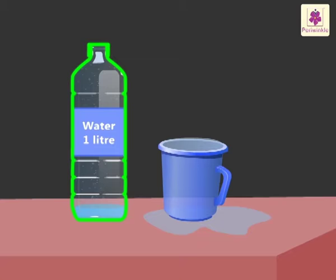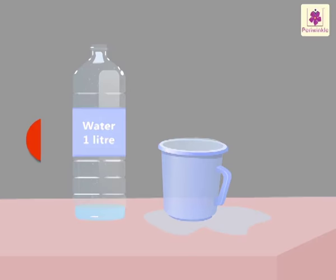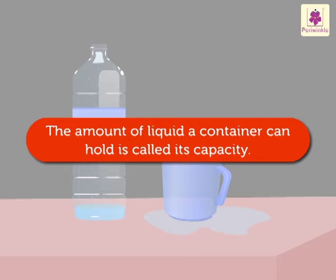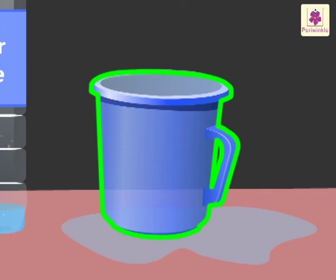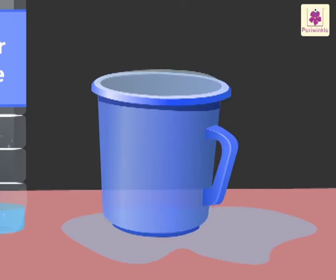The amount of liquid a container can hold is called its capacity. Here, the amount of water that the jar is holding is called the capacity of the jar.